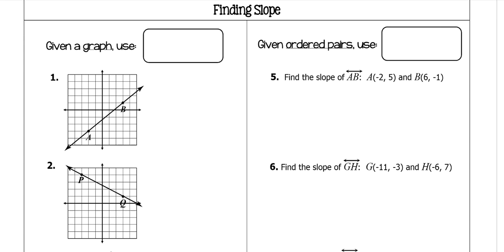So to find slope given a graph, we use rise over run. Alright, so we have these points.